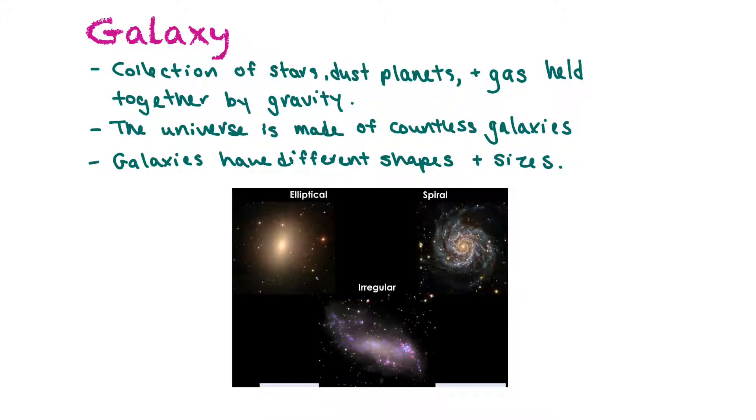A galaxy is a collection of stars, dust, planets, and gas held together by gravity. The universe is made of countless galaxies. We are having a hard time counting how many are out there because we haven't seen all the way through space yet, and it's just mind-boggling how many galaxies could be out there.